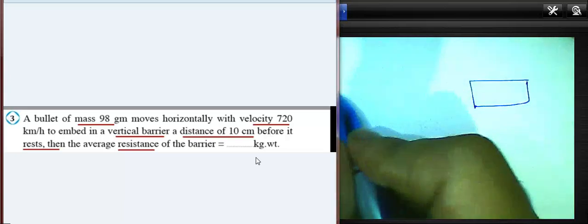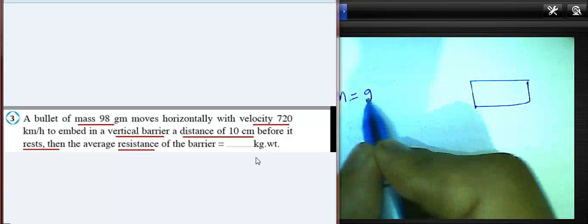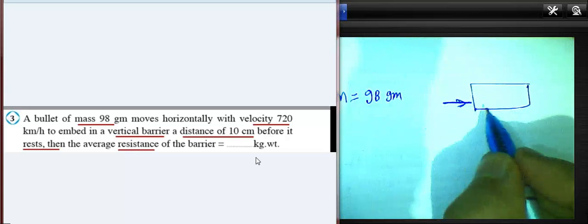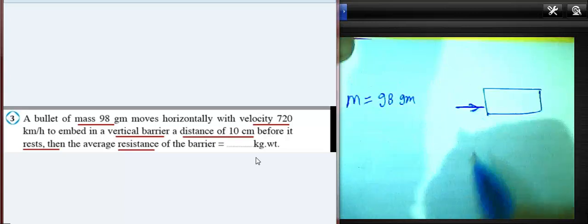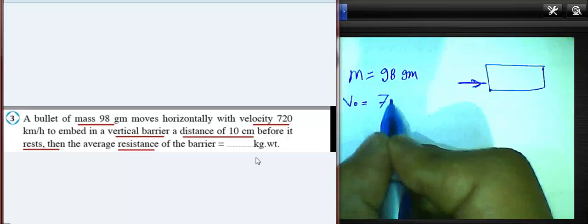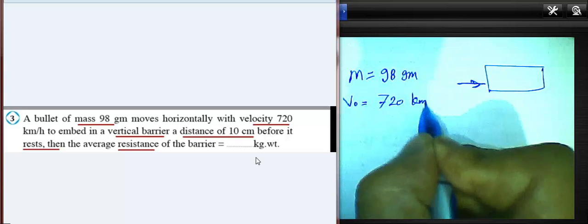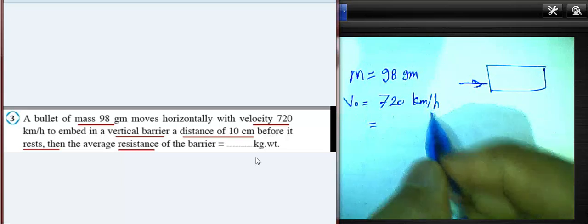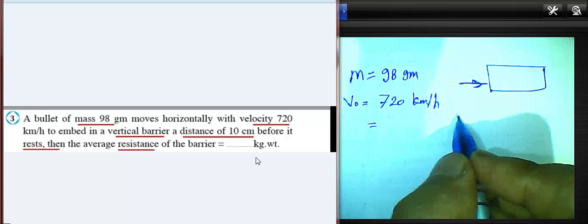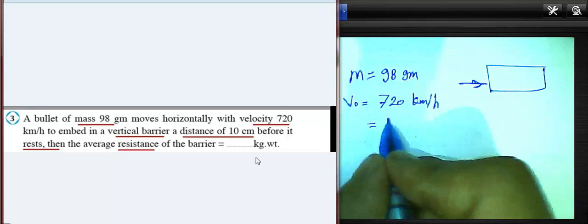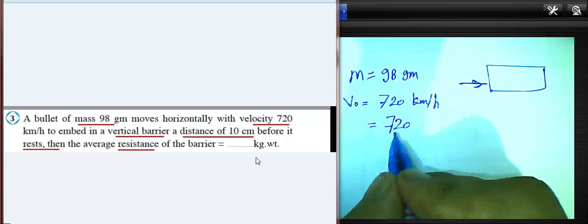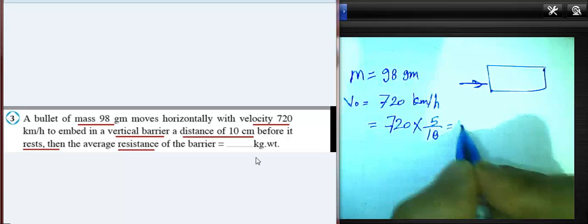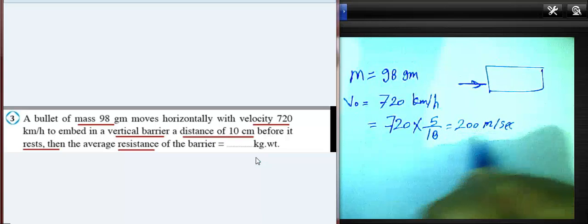The bullet of mass was 98 grams. It moved with velocity v equal to 720 kilometers per hour. We must convert from kilometers per hour to meters per second by multiplying by 5 over 18. So 720 multiplied by 5 over 18 gives us 200 meters per second.